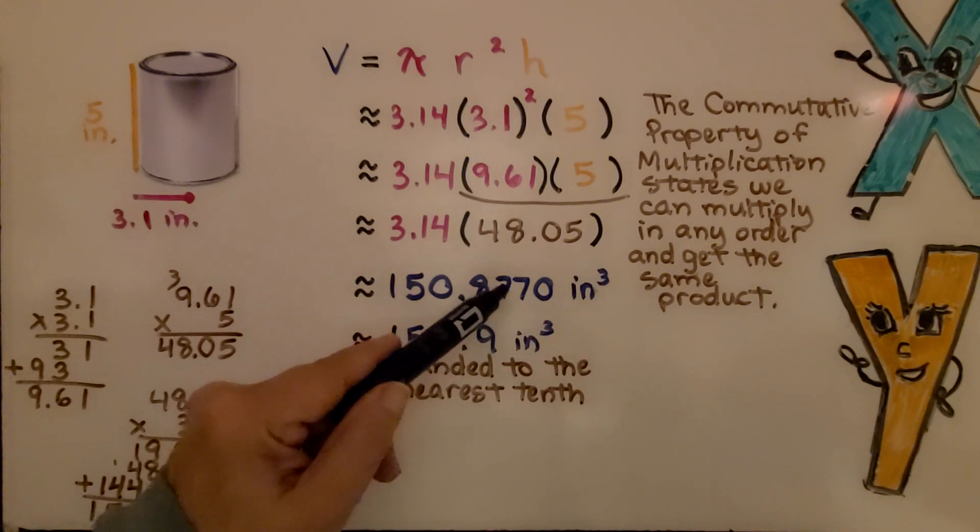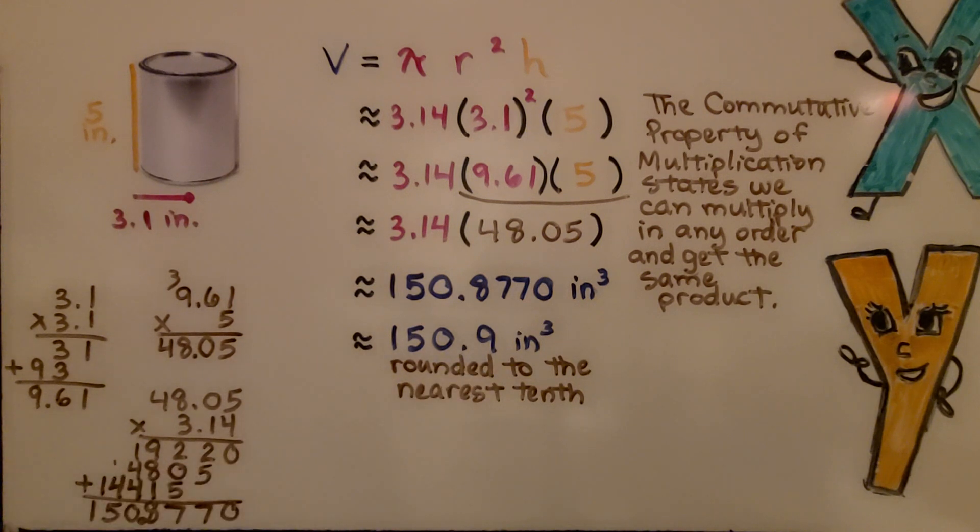We round that off. The 7 tells the 8 to go up to a 9 and then they all drop off. We have 150.9 inches cubed or cubic inches when it's rounded to the nearest tenth.